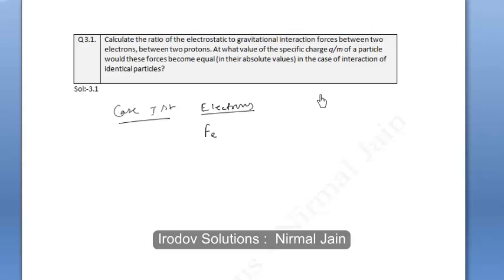We must know that the mass of one electron is around 9.1 times 10 to the power minus 35 kg, and the charge of one electron is around 1.6 times 10 to the power minus 19 coulomb.